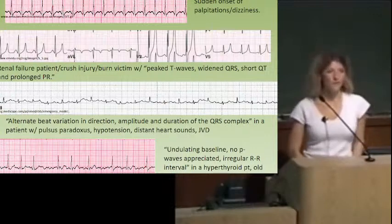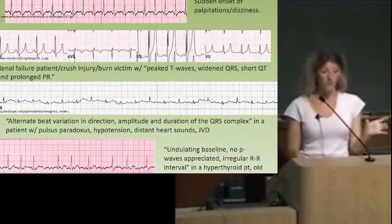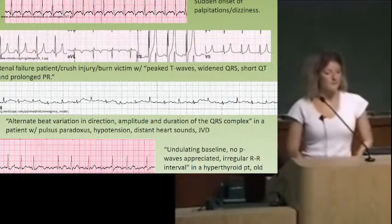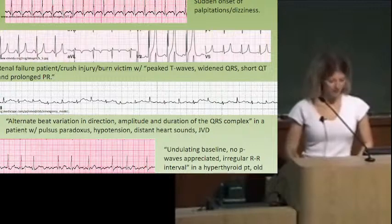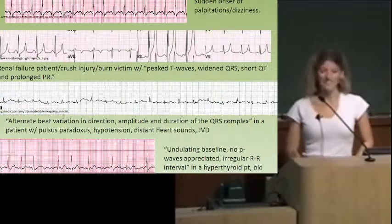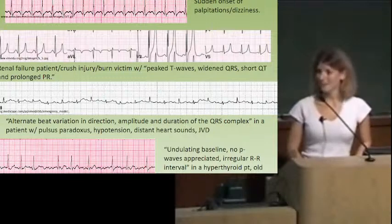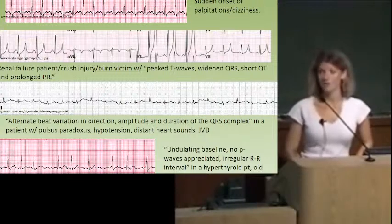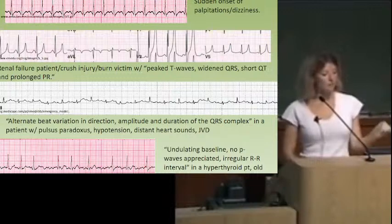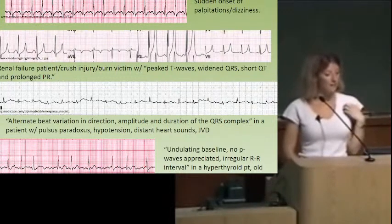The third EKG here was one I missed several times in my Q-bank. The baseline is kind of undulating. It's not MAT because we don't really see morphologically distinct P waves — it's such low voltage. The two hallmarks are: alternate beat variation in direction — kind of undulating — and very low voltage.